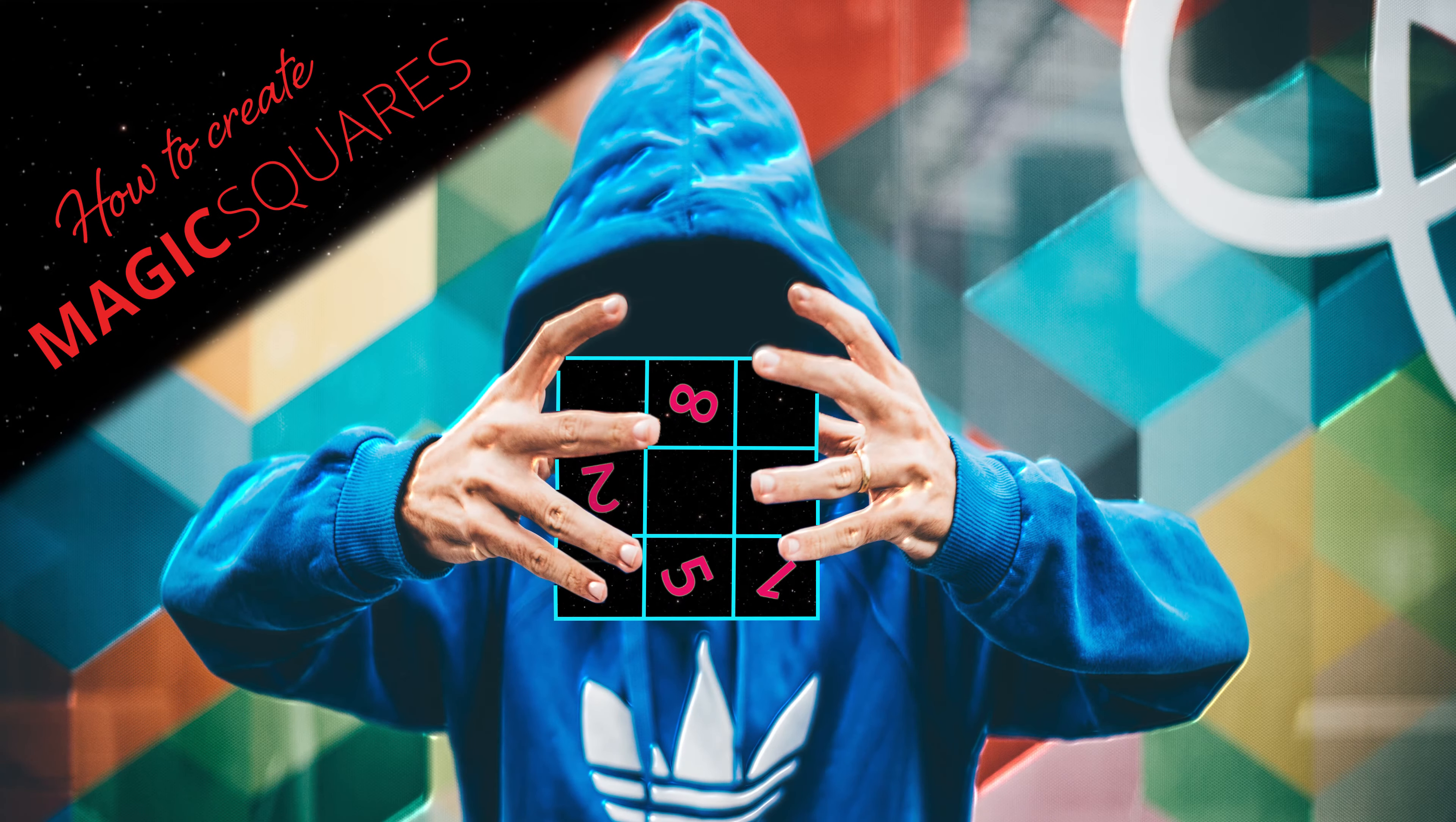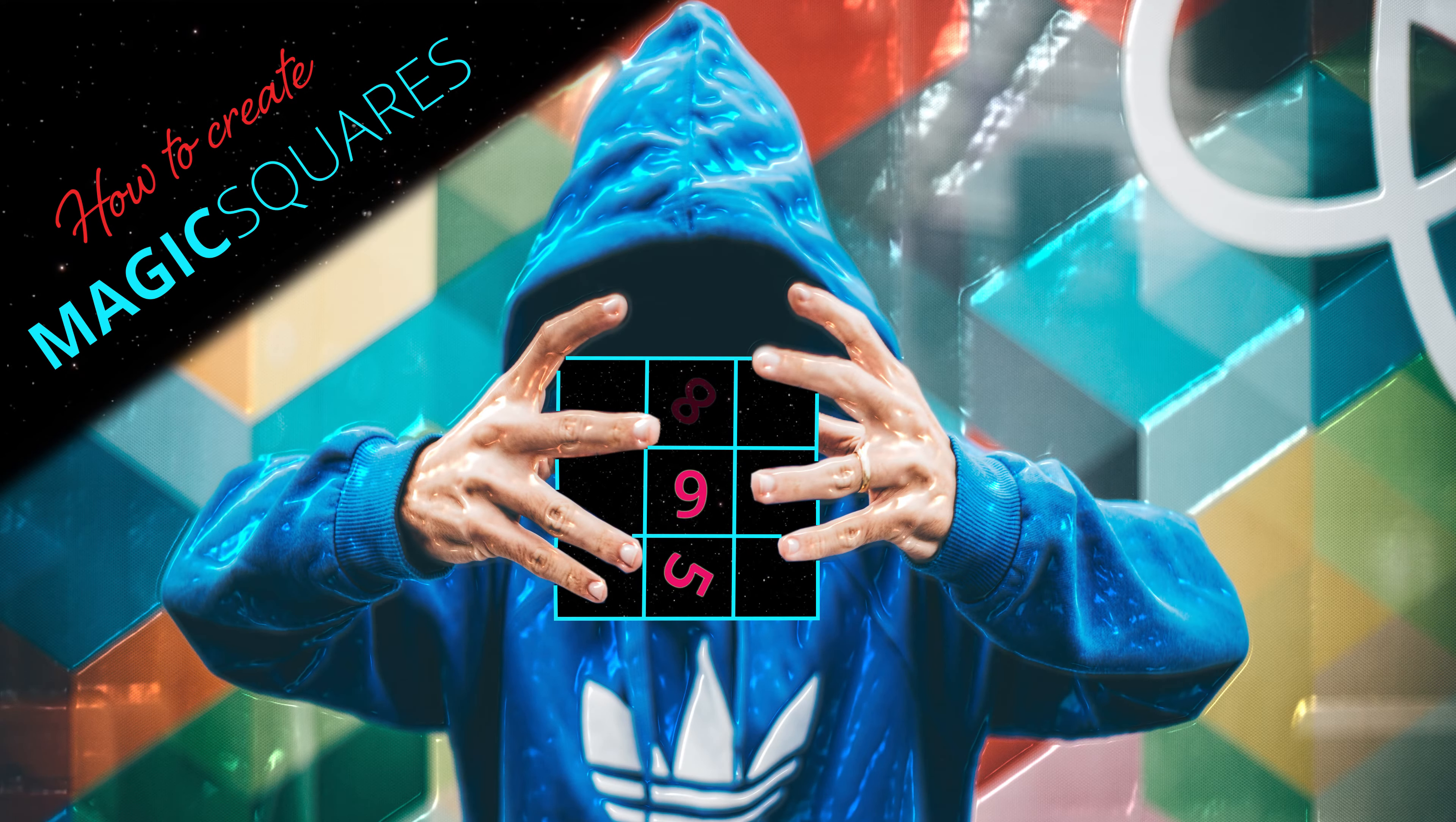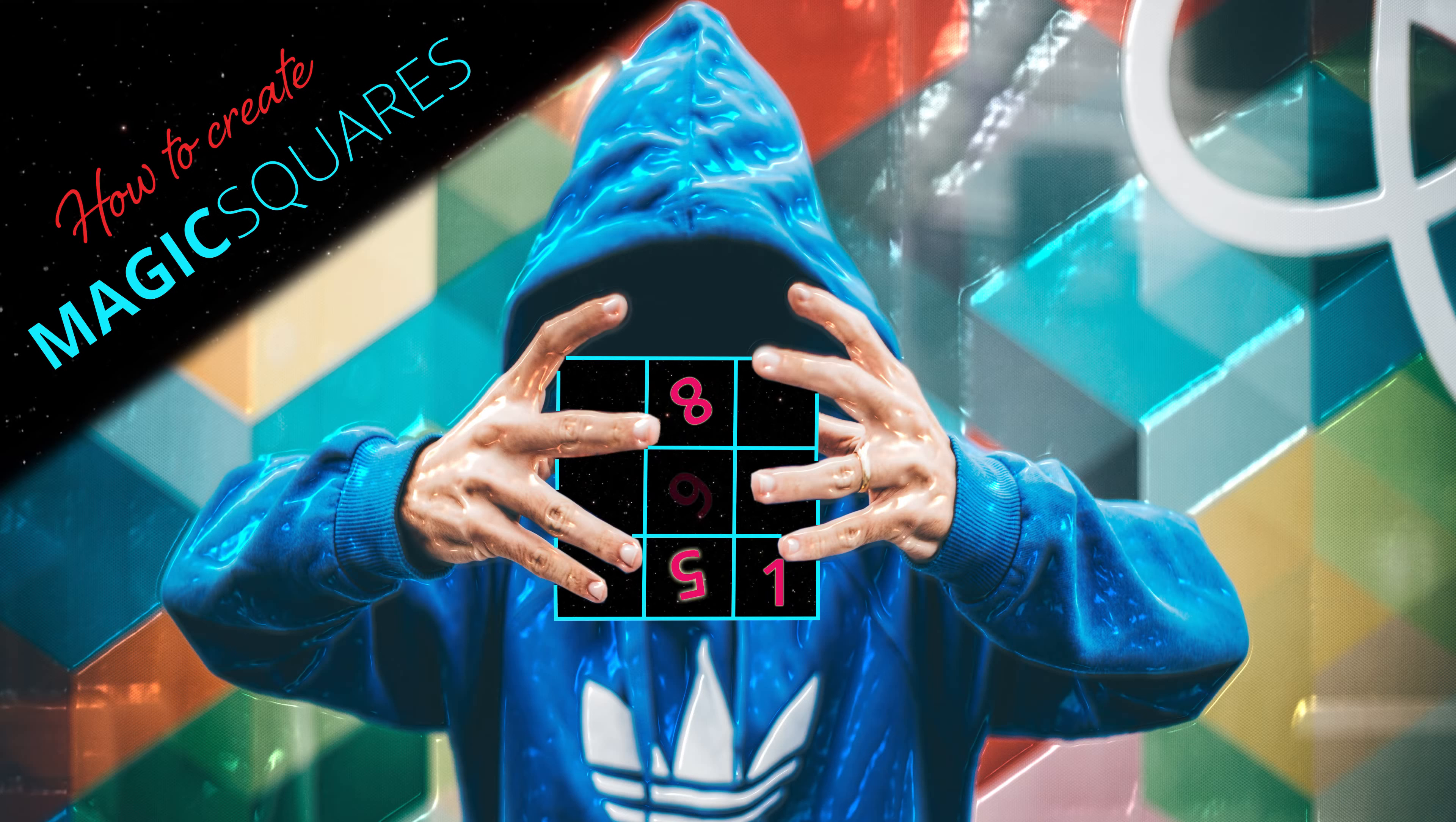G'day! Welcome to Accelerate Maths. What is a magic square? Well, the numbers in each row, each column, and each diagonal add up to the same number.